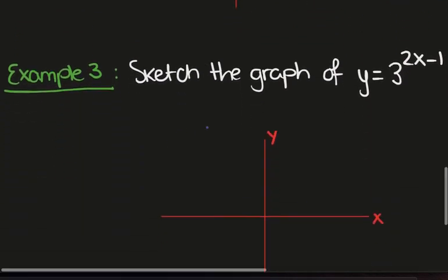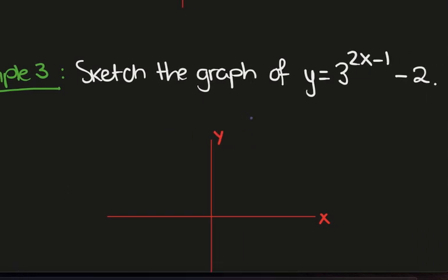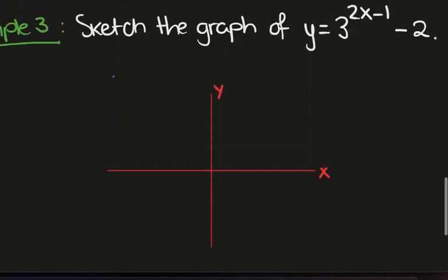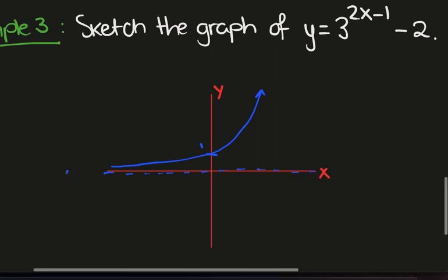Okay, here we have something a little more challenging. Sketch the graph of y equals 3 to the 2x minus 1 minus 2. So what we'll do first is sketch y equals 3 to the x. So that's this graph. That's a 1. This is y equals 0. So that's y equals 3 to the x.